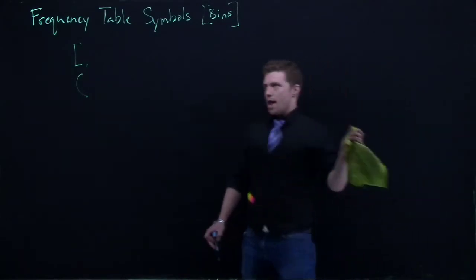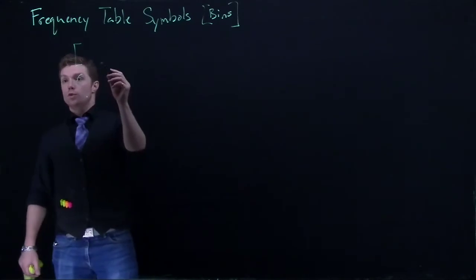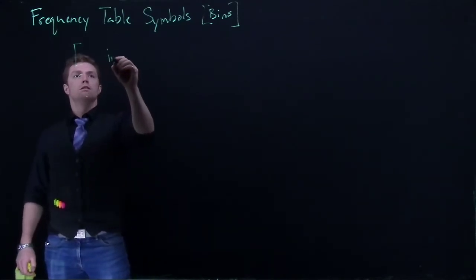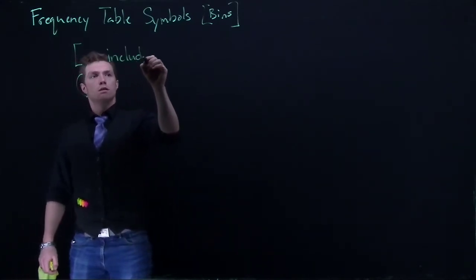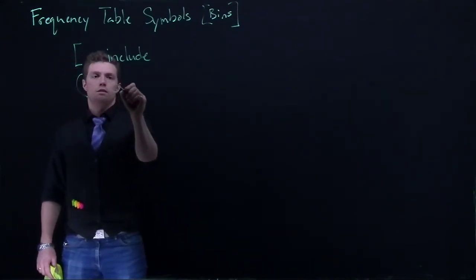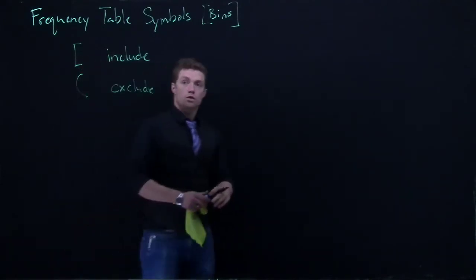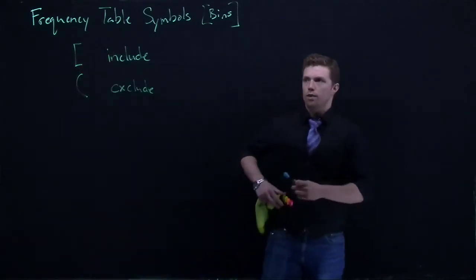So, a bracket simply means that we're going to include this value and the parentheses means we're going to exclude it. Okay, so let me give you an example of what this would mean.